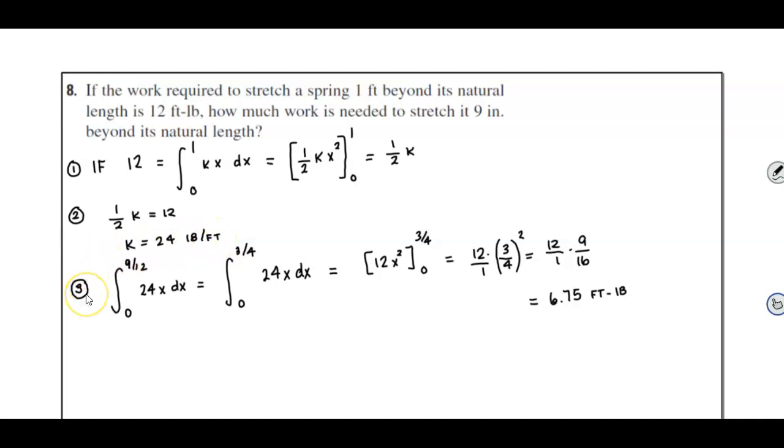Now, in step three, we want to know how much work is needed to stretch it nine inches. Well, there are 12 inches in a foot, so we know that it's going to go from 0 to 9 over 12, the function 24x dx. Now, if we reduce that 9 over 12, it becomes 3 fourths. So now we're going from 0 to 3 fourths of the function 24x dx.